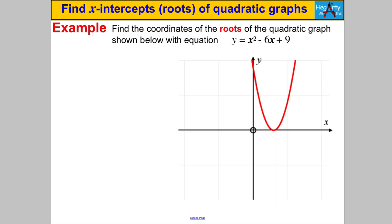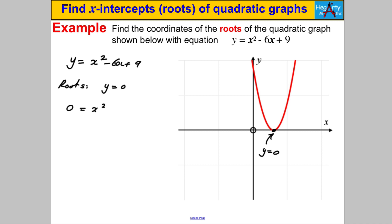Let's have a go at another one — pause the video and have a go. Here it seems like the graph isn't crossing at two places; it appears to be touching at just one particular point. The roots are still where y = 0. The graph is y = x² - 6x + 9. At the roots, y = 0, so we solve 0 = x² - 6x + 9.